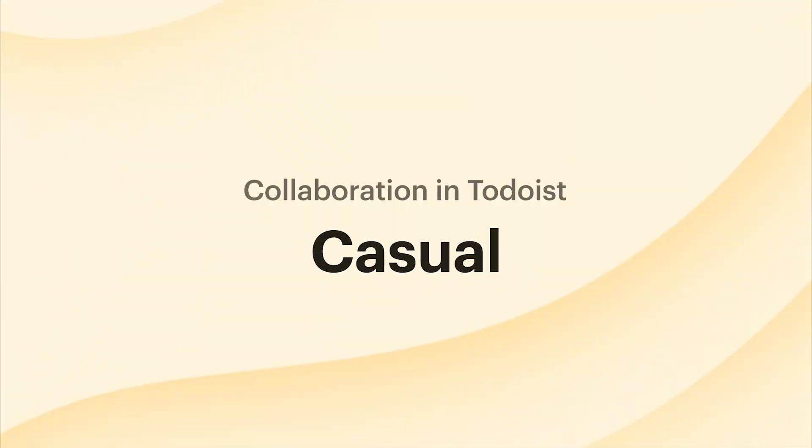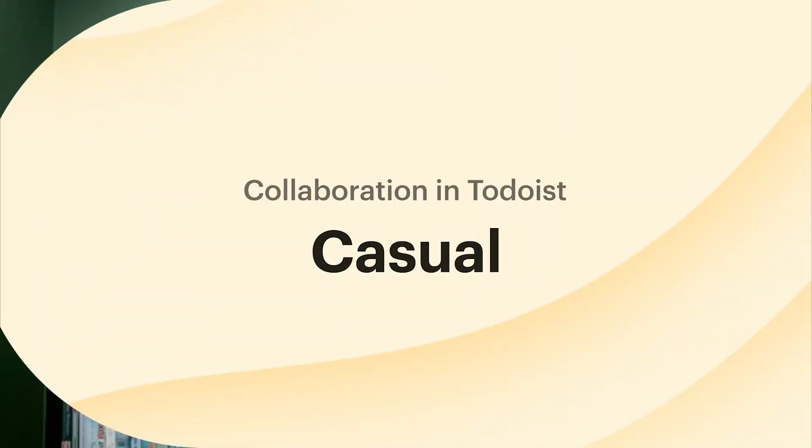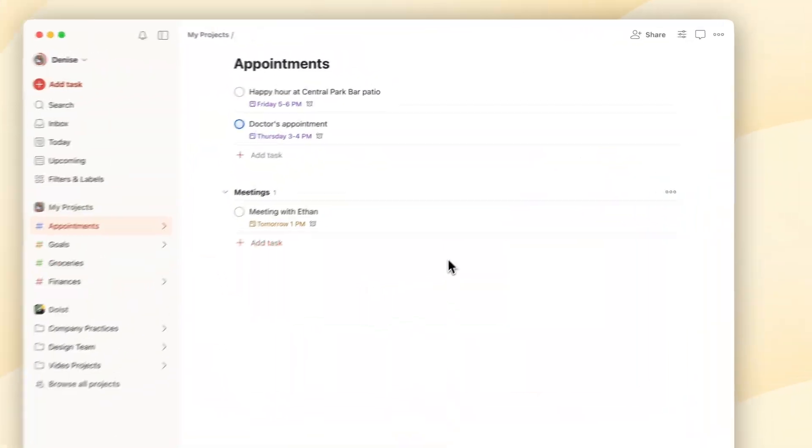First up, casual collaboration. This is perfect for sharing personal projects with friends and family. For example, a weekend getaway, a grocery list, or a family reunion. Here's how to make it happen.